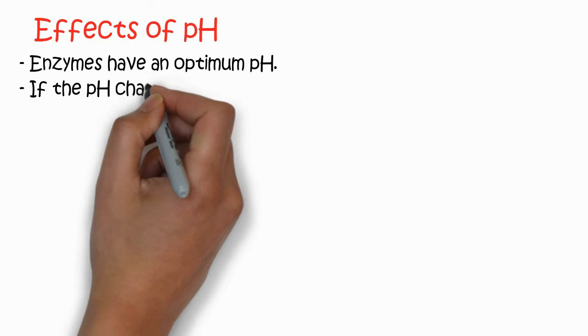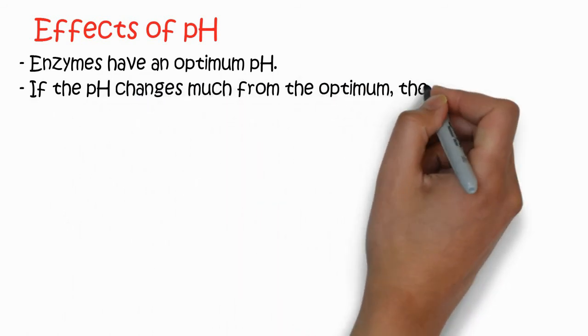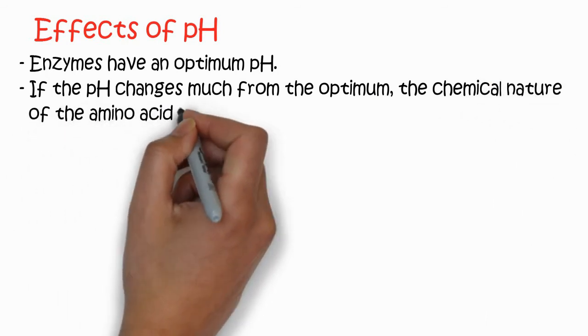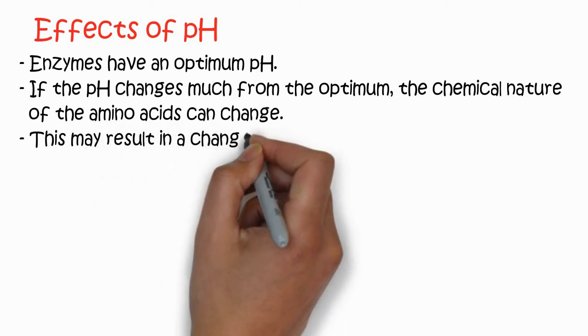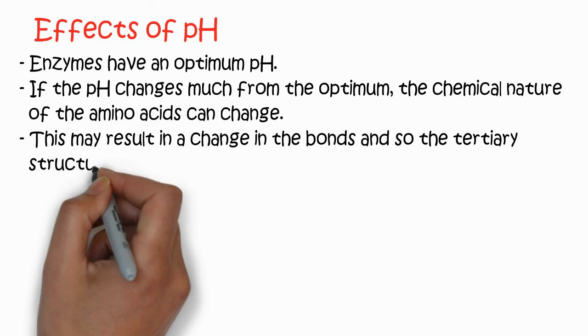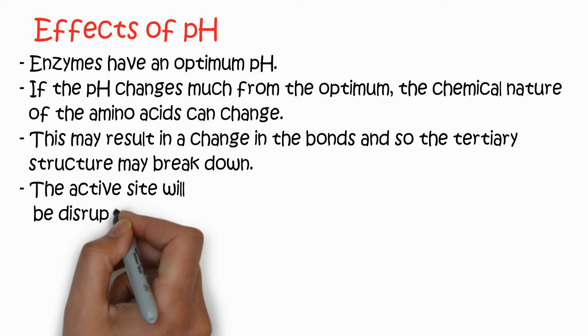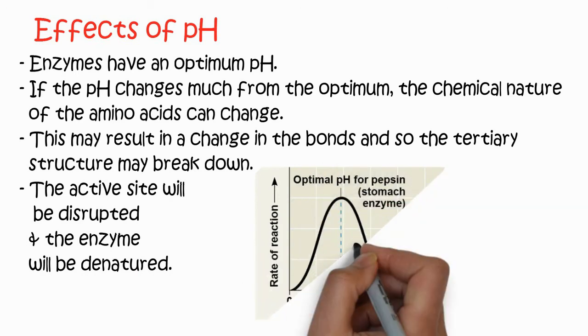Next is the effect of pH. Enzymes have an optimum pH for their specific activity. If the pH changes much from the optimum, the chemical nature of the amino acids can change. This may result in change in the bonds, so the tertiary structure may break down. The active site will be disrupted and enzyme will be denatured.